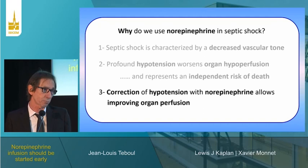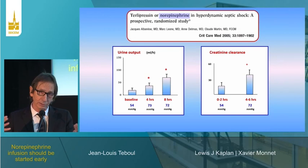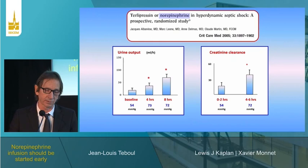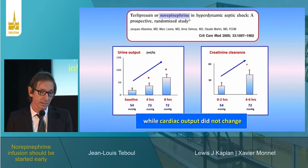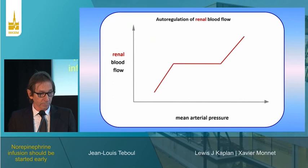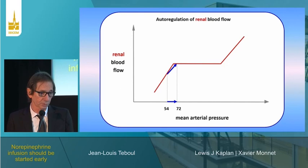One study from Marseille (Claude Martin's group) looked at urine output and creatinine clearance in septic shock patients receiving norepinephrine. Baseline MAP was 54 mmHg. When MAP was increased with norepinephrine, values of urine output and creatinine clearance went up, while cardiac output did not change — so the effect was not due to cardiac output but probably due to the increase in MAP. Increasing MAP from 54 to 72 mmHg improves renal blood flow even without increasing cardiac output.